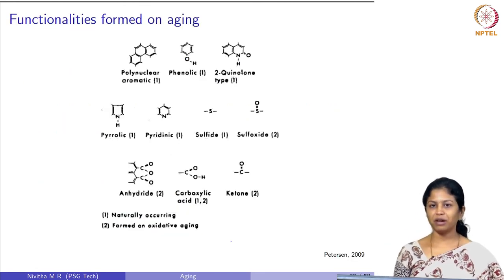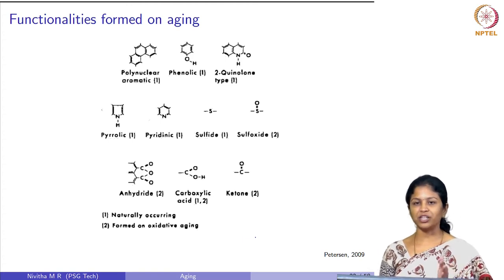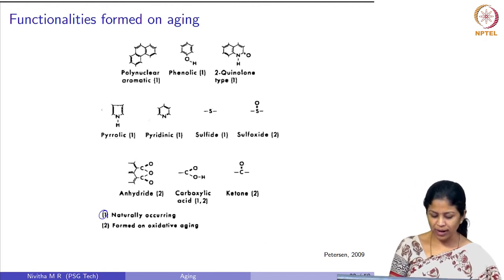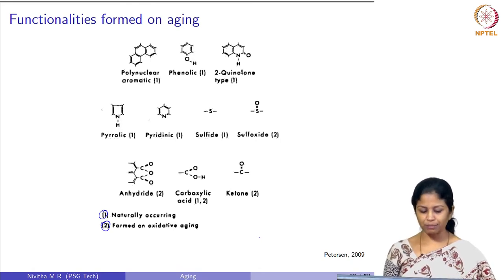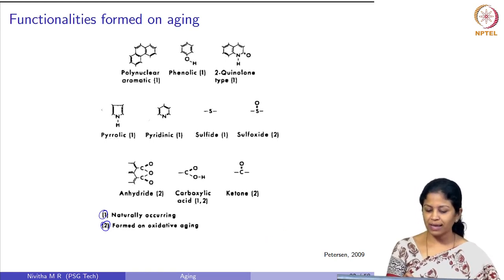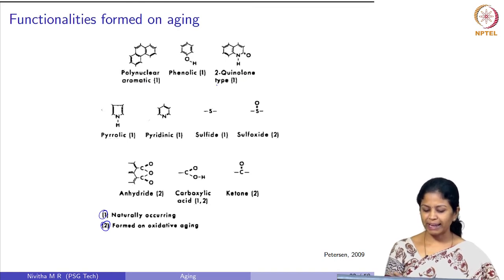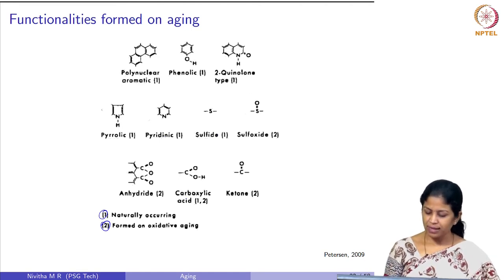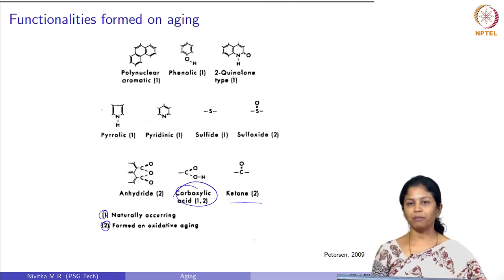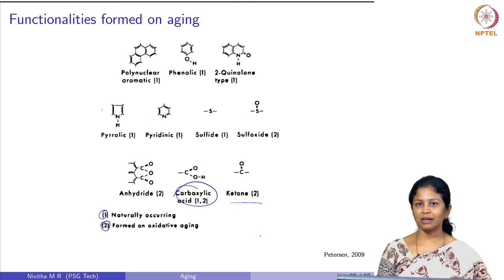This figure by Peterson et al. lists the functionalities in bitumen that are naturally available and those formed on aging. Naturally occurring functionalities include polynuclear aromatics, phenolics, quinoline-type, pyrolic, pyridine, and sulfide compounds. Sulfoxide, anhydride, and ketones are formed on oxidative aging. Carboxylic acid can be both naturally available in bitumen and formed on oxidative aging. These are some of the commonly observed functionalities as a result of aging in bitumen.